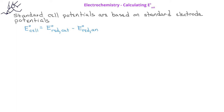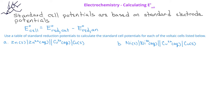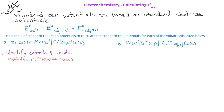Let's look at a few examples. In this first example, we have the familiar zinc/zinc-2+, copper-2+/copper electrochemical cell. Since we recognize from our cell notation that the anode or the oxidation half-reaction is on the left and the cathode or reduction half-reaction is on the right, we know that the copper-2+/copper half-cell is the cathode. From the table of standard electrode potentials, we see that the copper-2+/copper half-reaction has an electrode potential of plus 0.34 volts.